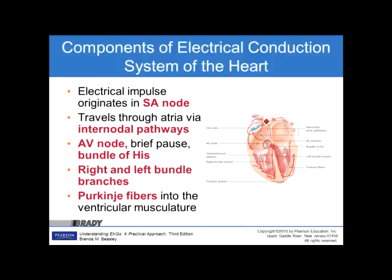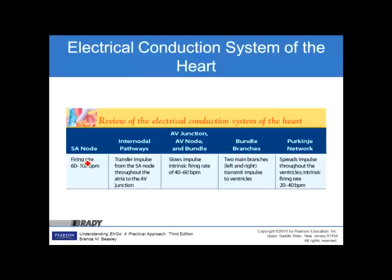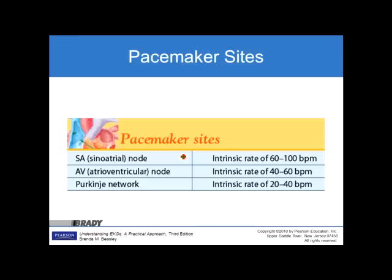Each one of these structures has an intrinsic rate: 60 to 100 for the SA node, 40 to 60 for the AV node, and 20 to 40 for the ventricular muscle. Your primary pacemaker site is the sinoatrial node. Your secondary pacemaker site is the AV node. And your last pacemaker site is the Purkinje network — each one holding an intrinsic rate of 60 to 100, 40 to 60, and 20 to 40 respectively.